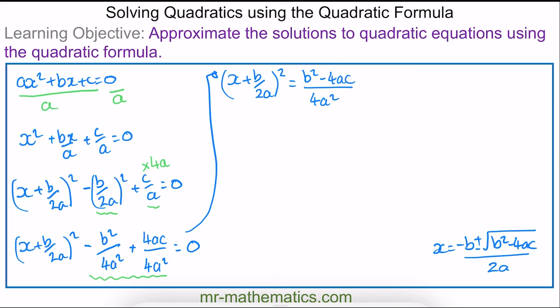To carry on making x the subject, I'm going to take the square root of both sides, because then the square and the square root will cancel. So now we have x + b/2a = ±√(b² − 4ac) / 4a².